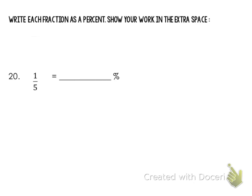So you have two options of going about solving this. We know that anything over 100, the numerator would be the percent. So when we have 1 over 5, we need the denominator to be 100.